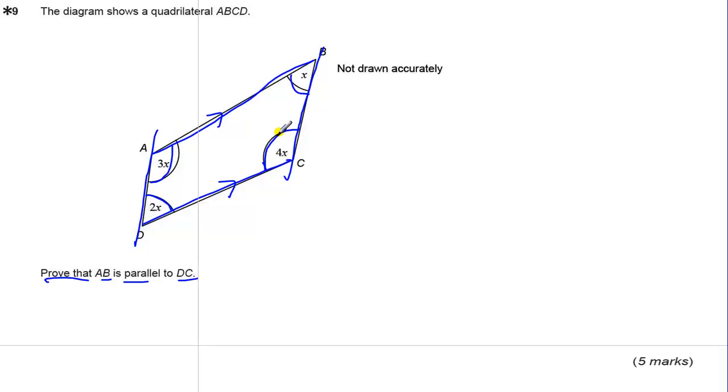You can see the x's there. So we've got the angles in a quadrilateral, x plus 4x plus 2x plus 3x equals 360 degrees in a quadrilateral.